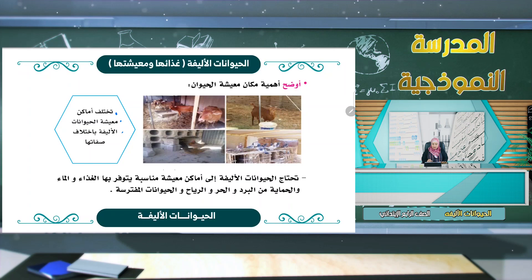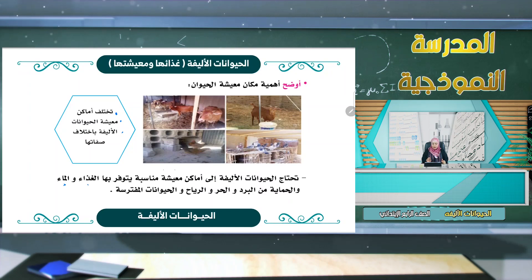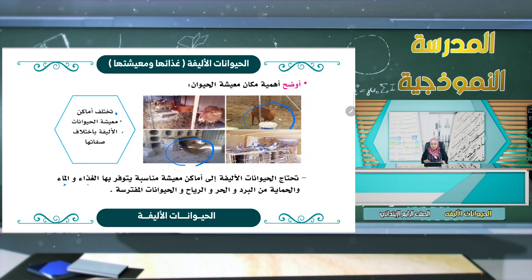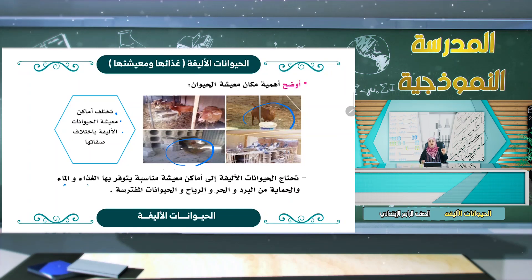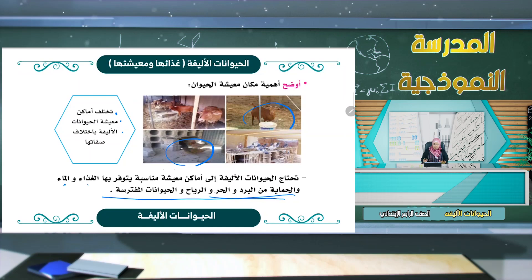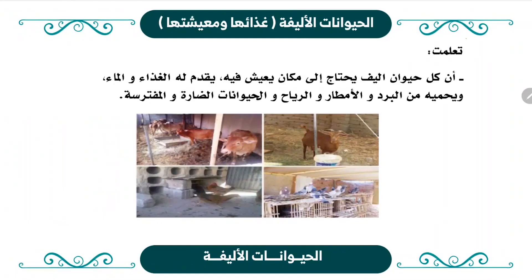تحتاج الحيوانات الأليفة إلى أماكن معيشة مناسبة يتوفر فيها الغذاء والماء والحماية من البرد والحر والرياح والحيوانات المفترسة. نجد هنا بيوتاً للحمام وبيوتاً للدجاج. المكان المناسب يقيه من البرد والحر ويوفر له الغذاء والماء ويحميه من الحيوانات الضارة والمفترسة، كبيوت الحمام والدجاج والأبقار والماعز.